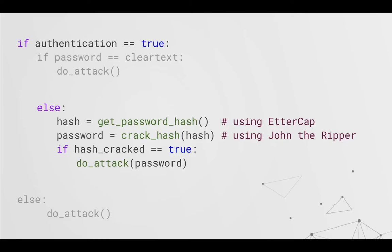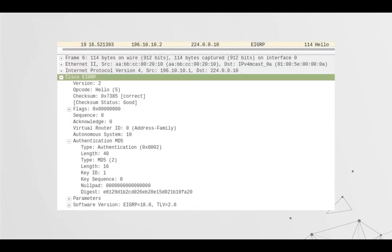Even with crypto applied, it's not game over. You can get the hash for certain algorithms using Ettercap and then crack it with John the Ripper. Often these things are configured with weak passwords like 'password', 'key', or 'cisco' — the guides for configuring Cisco OSPF authentication always use weak passwords, so you can try to guess it as well. If you look at this EIGRP packet with hashing applied, you can pass the hash to Ettercap and try to crack it to join the routing process.